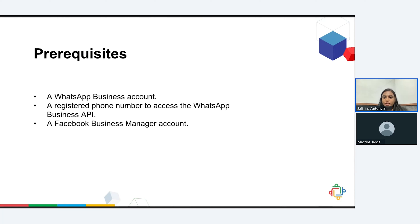Before configuring your WhatsApp account with Zoho Team Inbox, you'll require a set of prerequisites. As you can see on the screen, you will need a WhatsApp business account, a registered phone number to access the WhatsApp business API, and a Facebook business manager account. The configuration between Zoho Team Inbox and WhatsApp is pretty straightforward. It only requires a few steps.